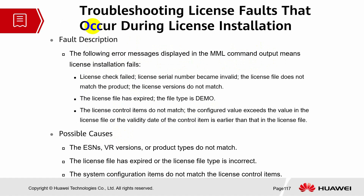Let's look into how to troubleshoot license faults that occur during license installation. The following error messages displayed in the MML command output indicate a license installation failure: license check fail, license serial number became invalid, the license file does not match the product, license version does not match, the license file has expired, or the file type is demo.